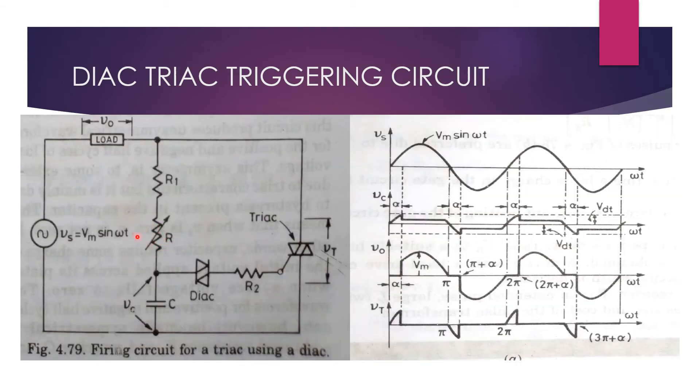The variable resistor R controls the charging time of the capacitor C and therefore the firing angle of the TRIAC. When R is small, the charging time constant is small.